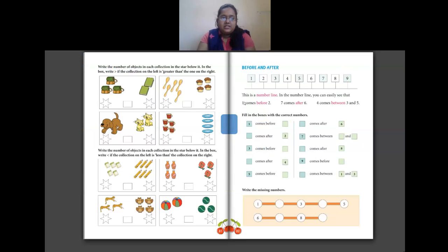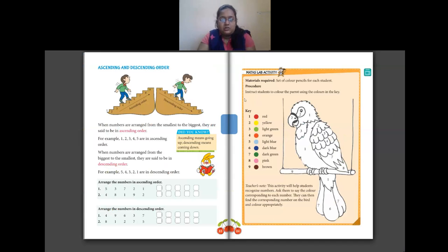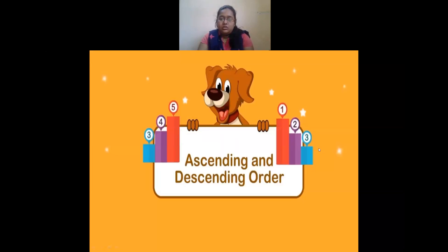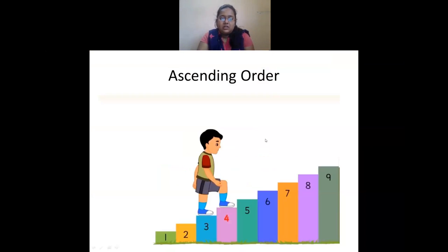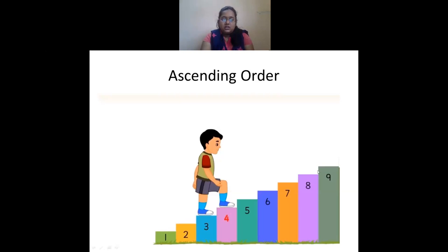Next we have ascending and descending order — the ways to arrange numbers. For ascending order, imagine a boy climbing up steps: he starts at 1, then 2, 3, 4, 5, 6, 7, 8, 9. He starts from the smallest step, 1, and reaches the greatest, 9. Arranging numbers from smallest to greatest is called ascending order, also known as increasing order.